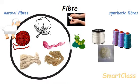Jute fiber is obtained from the stem of the jute plant. Jute crop is cultivated in the rainy season. The jute plants are harvested from the fields when they are at the flowering stage. The stems of harvested jute plants are immersed in water for a few days, during which the stems rot and fibers are left behind. The jute fibers are then separated from the water by hand. Jute is a rough fiber and is not used to make cloths, but it is a strong fiber used to make ropes and jute bags or gunny bags. The outer covering of a coconut also has fibers called coconut fibers, which are used for making ropes and mats.